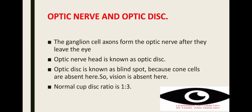Our last part is the optic nerve and optic disc. The ganglion cell axons form the optic nerve after they leave the eye — ganglion cells are the final output neurons of the retina. The optic nerve head is known as the optic disc, also called the blind spot, because there are no photoreceptors there and vision is absent. The normal cup-to-disc ratio is 1:3.